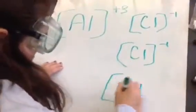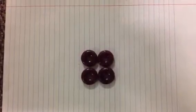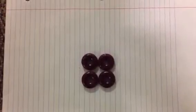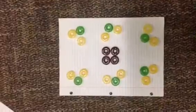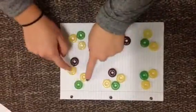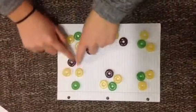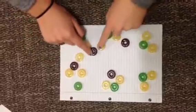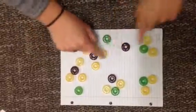Next, we'll look at a particle diagram of the reaction. As you can see, aluminum is a solid metal that is represented by the purple lifesaver. Copper chloride is an aqueous solution. Copper is represented by green and chloride by yellow. When the two substances combine, the chloride is attracted to the aluminum in groups of three. The copper is left as a solid.